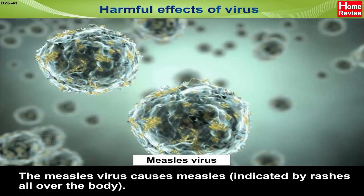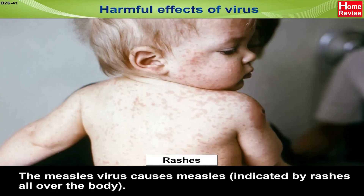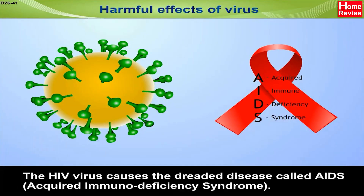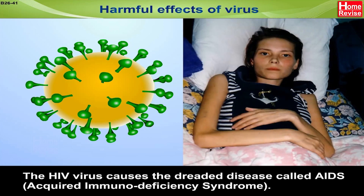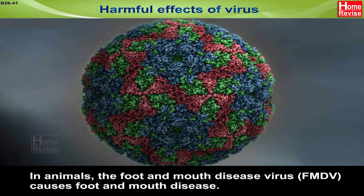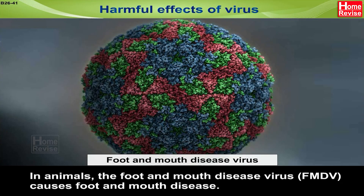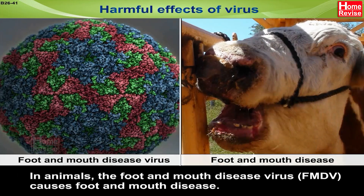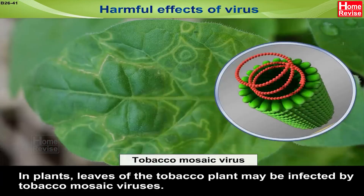The measles virus causes measles, indicated by rashes all over the body. The HIV virus causes the dreaded disease AIDS — Acquired Immunodeficiency Syndrome. In animals, the foot and mouth disease virus (FMDV) causes foot and mouth disease. In plants, leaves of the tobacco plant may be infected by tobacco mosaic virus.